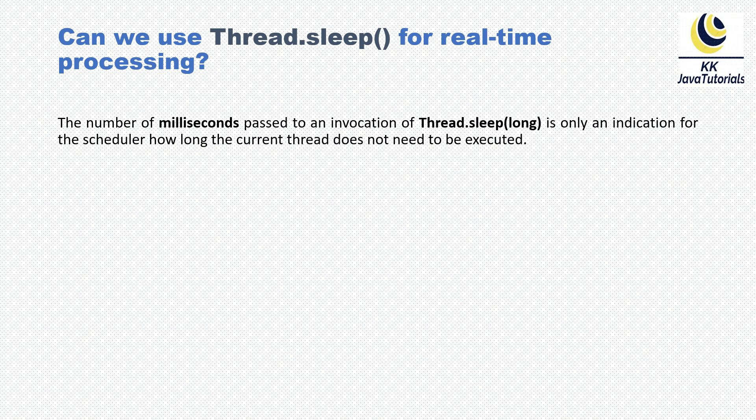When we talk about the Thread.sleep() method, as you know, the sleep method is static, so you can call it directly by the class name and specify the time in milliseconds. The number of milliseconds passed to an invocation of Thread.sleep() is only an indication for the scheduler of how long the current thread does not need to be executed.